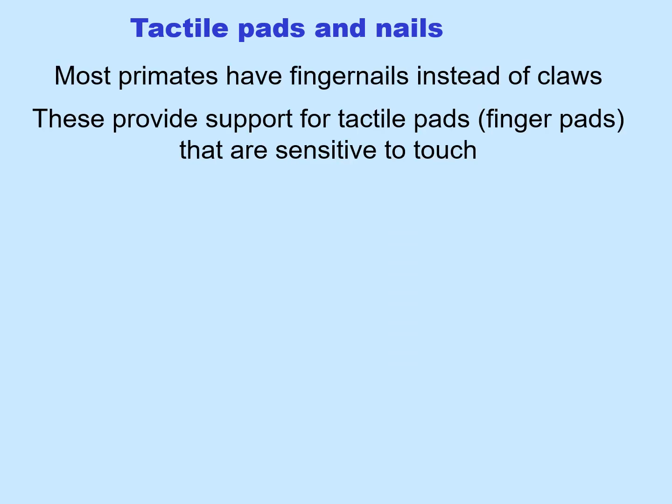Primates have tactile pads and nails. In other words, we have flat fingernails instead of claws. These fingernails provide support for our tactile pads — our finger pads — that are sensitive to touch and, incidentally, have fingerprints.